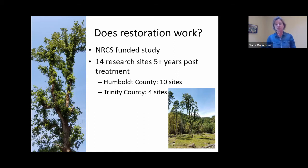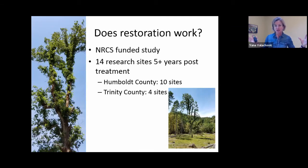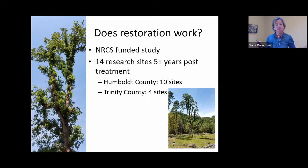We did another research project. We looked at 14 research sites that had been previously funded by the Natural Resources Conservation Service primarily, with a little bit of U.S. Fish and Wildlife funding, and we looked at the effects of restoration five years later. We had 10 sites in Humboldt and 14 sites in Trinity. On the left you can see an oak tree that had lost a lot of canopy, pretty narrow overall in its shape, but now look at the amount of new leaf material present on that oak tree — very fuzzy looking — with adventitious buds able to respond to that increased light availability.